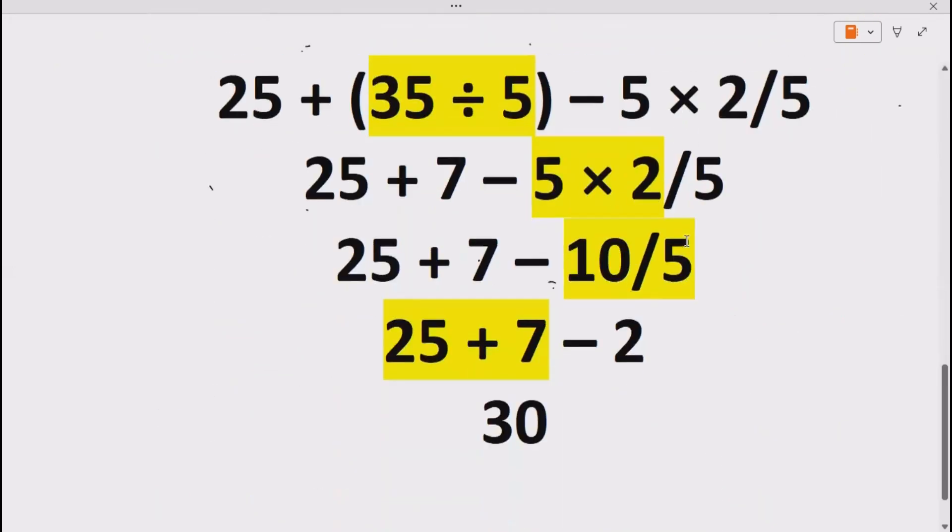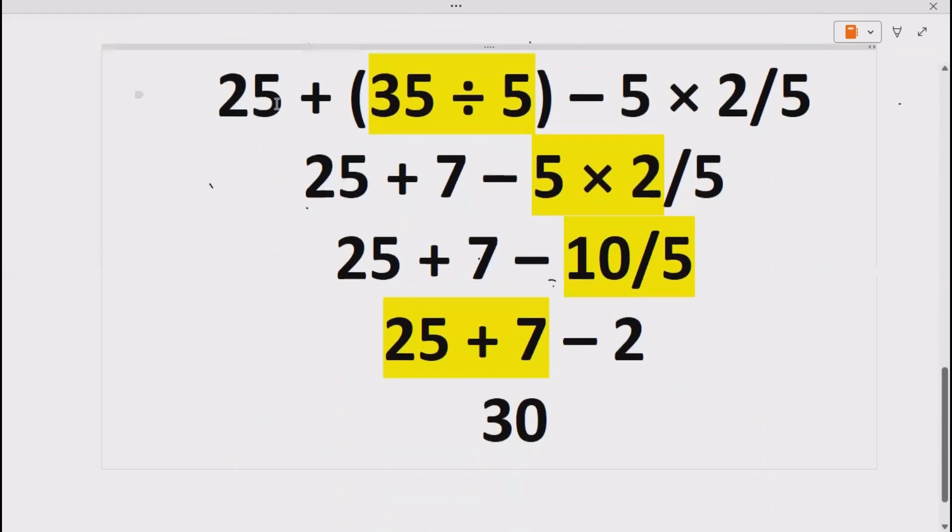Now let's see how we can solve our expression using this method. So we are given 25 plus in the bracket 35 divided by 5. So first we have to do the division, i.e. to solve this bracket. 35 divided by 5 gives us 7.